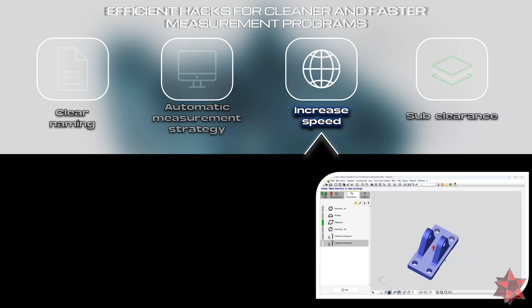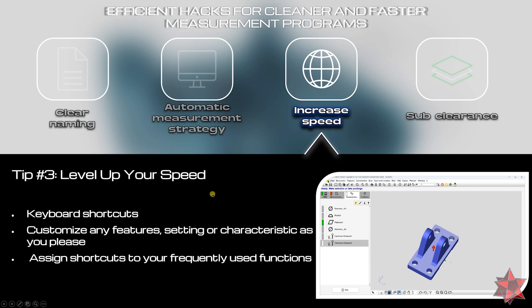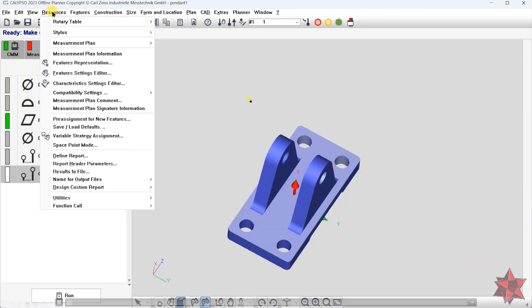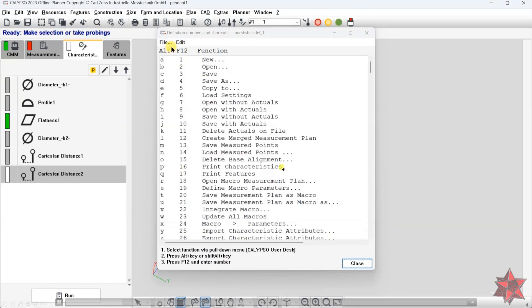Now let's move to tip number three. Do you ever feel overwhelmed by constant clicking in Calypso? Each and every one of us has this problem — click here, click there. There is a better way: unleash the power of keyboard shortcuts in Calypso. Calypso allows you to customize shortcuts for every function — creating features, constructing elements, assigning characteristics, even changing settings — all with a quick keystroke.